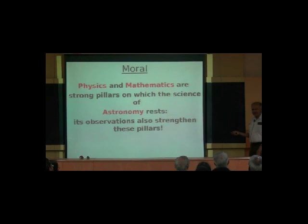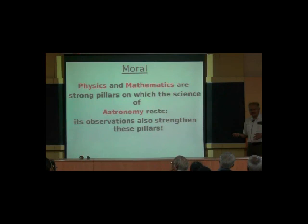In conclusion: physics and mathematics are strong pillars on which the science of astronomy rests, and astronomical observation also strengthens these pillars. By providing confirmation of what is calculated and assumed, astronomy helps physics and mathematics in return. It is a kind of mutual aid society of these three disciplines. Problems are always there — it is not the case that in any one lifetime all the problems will be solved.